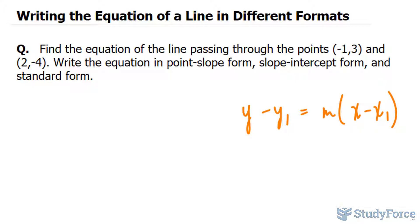So once we find our slope, which is represented by the letter m, we take any one of these points and substitute their coordinates specifically into where you see y1 and x1. Let's begin by finding the slope. The slope formula is m is equal to y2 minus y1 over x2 minus x1.